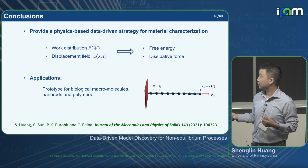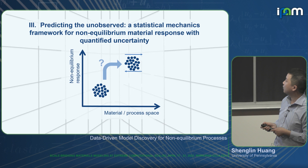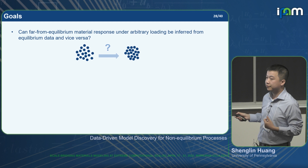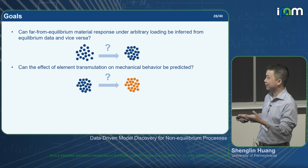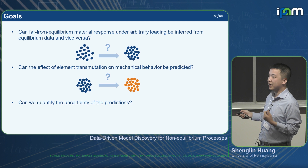The third work is on predicting the unobserved: a statistical mechanics framework for non-equilibrium material response with quantified uncertainty. Our goals are: can far-from-equilibrium material response be inferred from equilibrium material response? Can we predict the material response of system A using data from system B? And can we quantify uncertainty for these predictions? The answer to all these questions is yes, if the system can be described by stochastic differential equations.